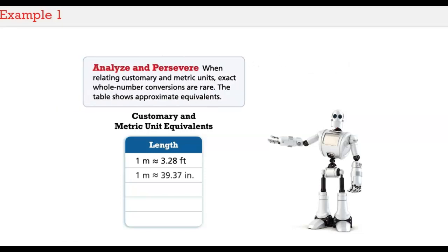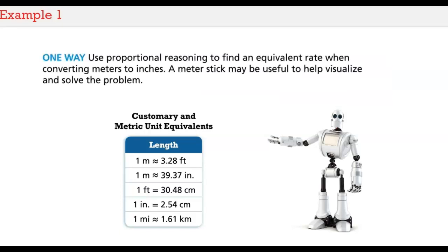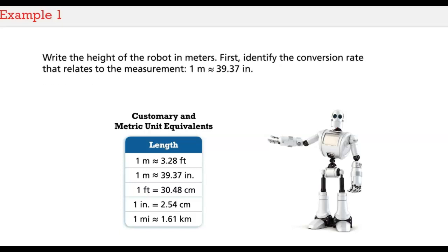When relating customary and metric units, exact whole number conversions are rare. The table shows approximate equivalence. One way to solve the problem is to use proportional reasoning to find an equivalent rate when converting meters to inches. A meter stick may be useful to help visualize and solve the problem. Write the height of the robot in meters first, then identify the conversion rate that relates to the measurement. One meter is approximately equal to 39 and 37 hundredths inches.